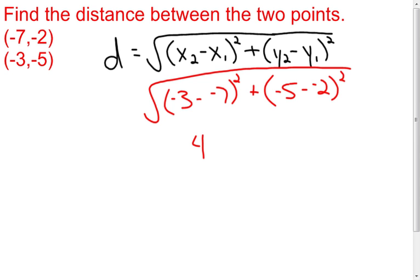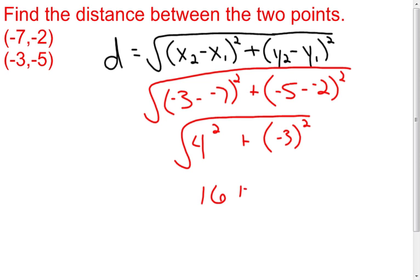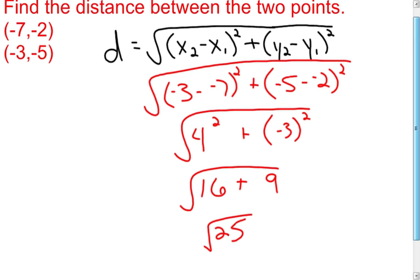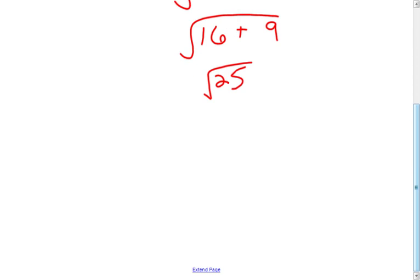Subtract these — we end up with 4, we have to square it. Subtract these — we end up with negative 3, square it. Take the square root. We end up with 16 and 9. Add them together, we get 25, and calculate the square root of that. The distance between our two points is 5 units.